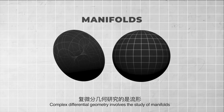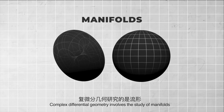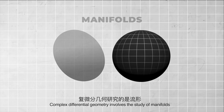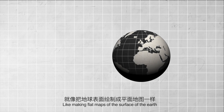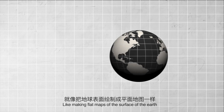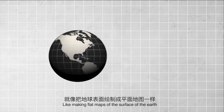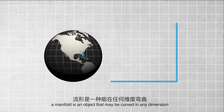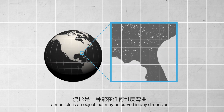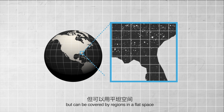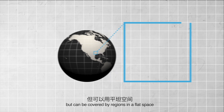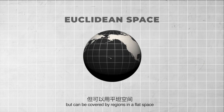Complex differential geometry involves the study of manifolds. Like making flat maps of the surface of the Earth, a manifold is an object that may be curved in any dimension, but can be covered by regions in a flat space,